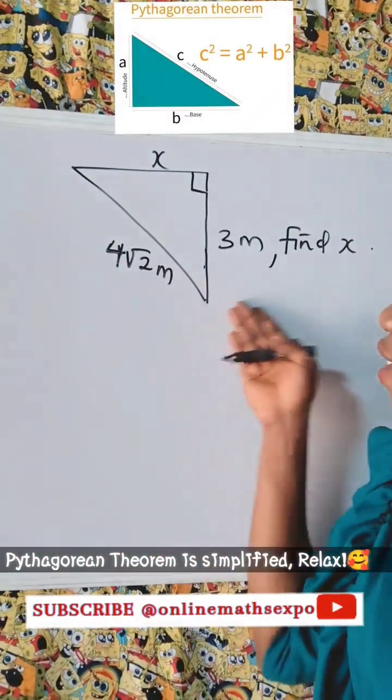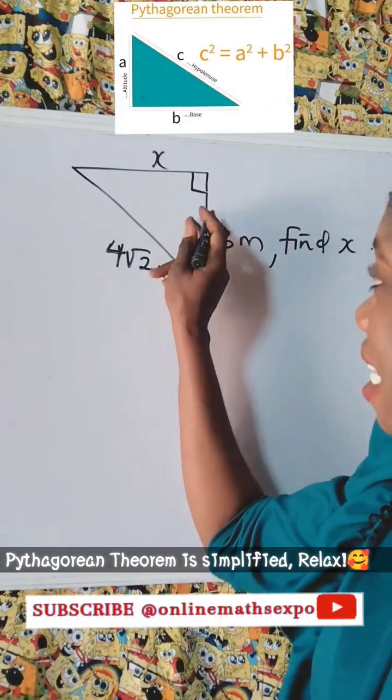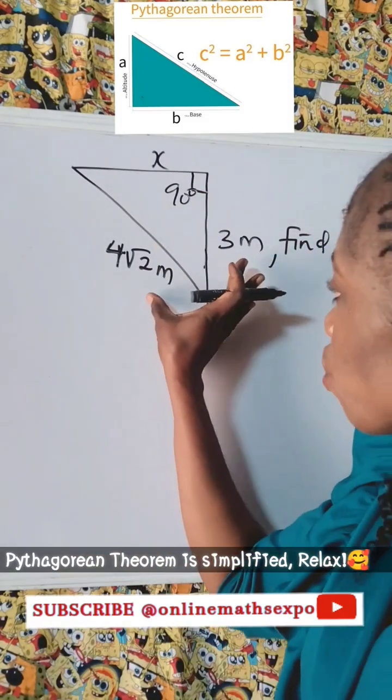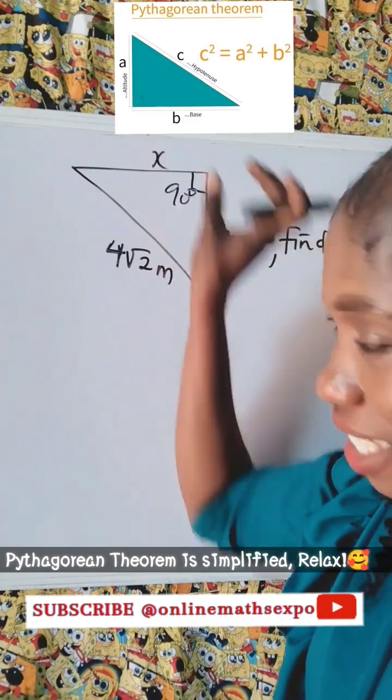Hello friend, to answer this question, remember this is a right angle triangle because of this angle 90. Okay, and we are given two sides to find the remaining side.